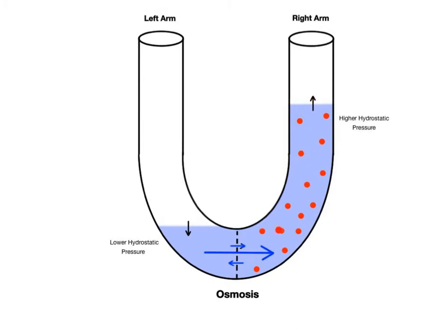As the water level in the right arm increases, its fluid pressure, called hydrostatic pressure, also increases. This higher pressure pushes more water molecules from right to left across the membrane, but the net movement of water is still into the right arm.